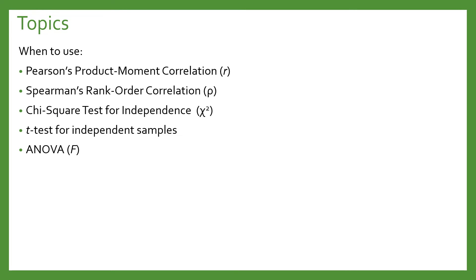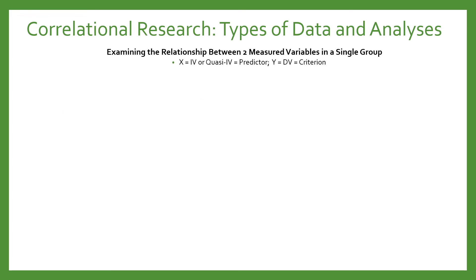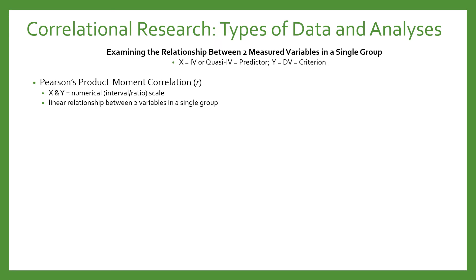We are going to be looking at statistical analyses in this lecture, and I'm going to get into the nitty gritty of the types of variables that lend themselves to these different types of analyses and the research strategies that lend themselves to them as well. The most common type of statistical analysis in this type of research is Pearson's product-moment correlation, or R. This is when your X, your quasi-independent variable, and your Y, your dependent variable, are measured on a numeric interval or ratio scale.